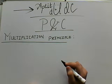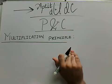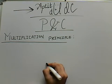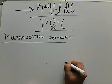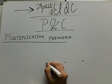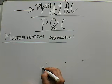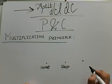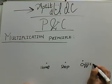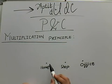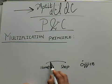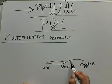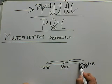The first thing which comes to our mind is why do we actually need this principle? For understanding that, let's take an example. Let's say there are three places — this is my home, this is someone's shop, and this is my office. There are only two roads connecting my home to the shop, and there are three roads connecting the shop to the office.